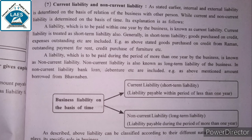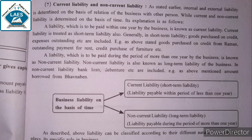A liability which is to be paid during the period of more than one year by the business is known as non-current liability. Non-current liability is also known as long-term liability of the business. In non-current liability, bank loan, debenture, and so on are included. For example, the above-mentioned amount borrowed from Bhavna Bank — us mein kya bola tha? Redeem after three years. One year se zyada time basis hai, toh woh humare liye non-current liability hai.